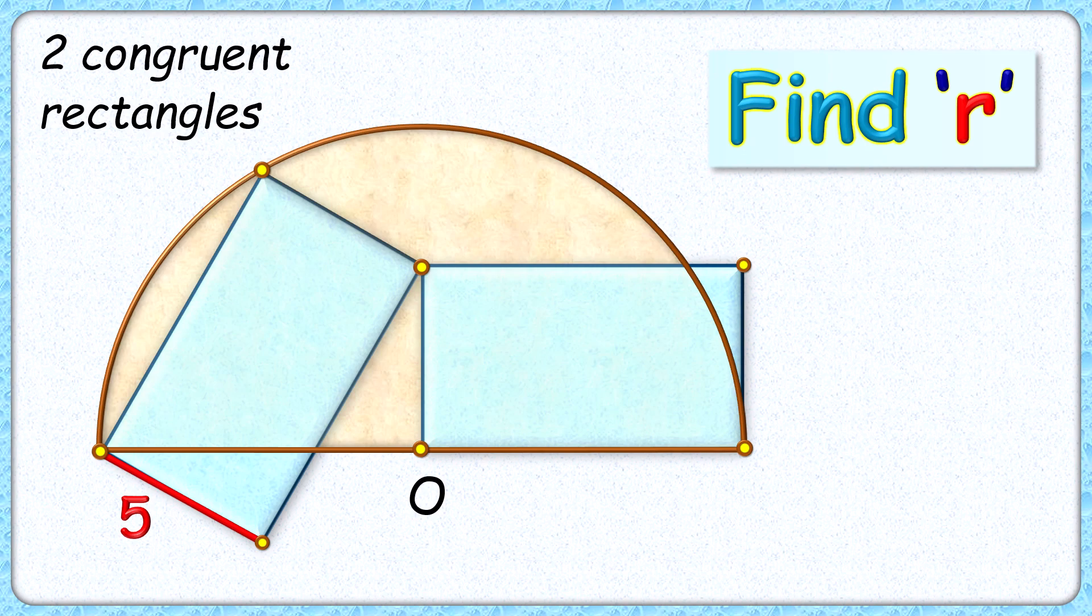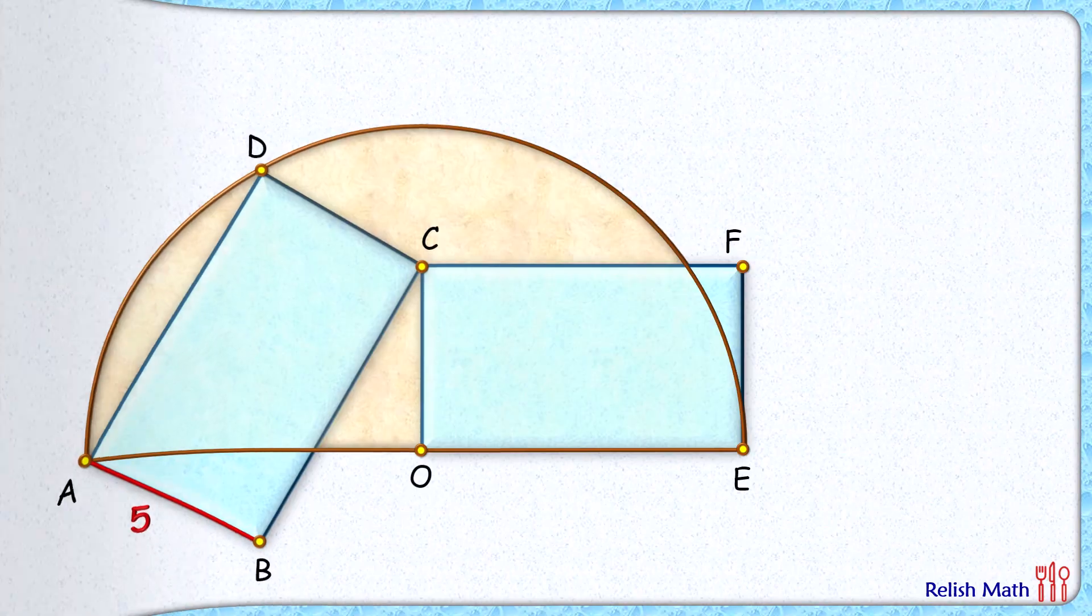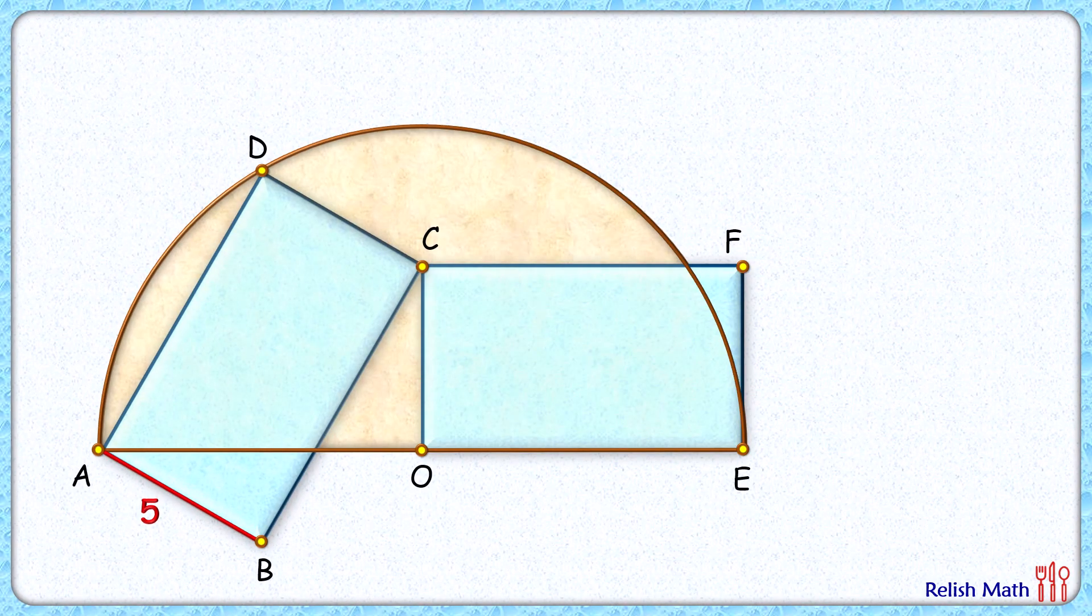Wow, this interesting question given to us is a semicircle with center O and two congruent rectangles with breadth 5 centimeter. The exciting part is with this limited data we have to find radius of semicircle. Let's check this simple and elegant solution.